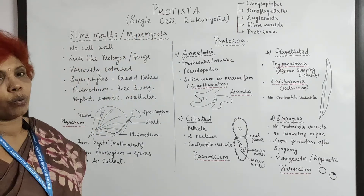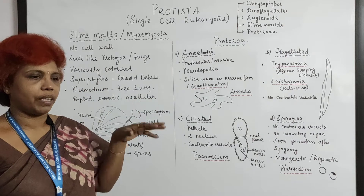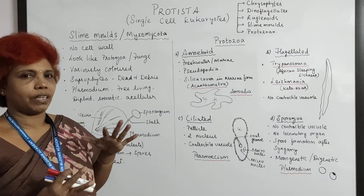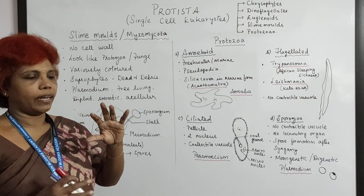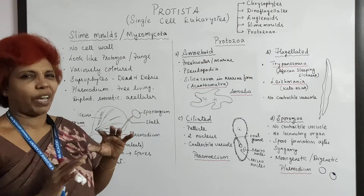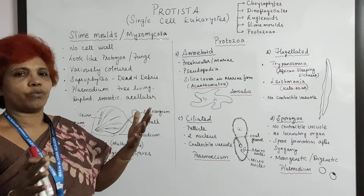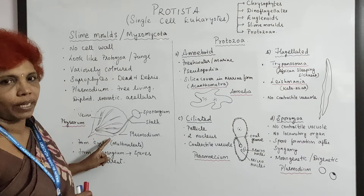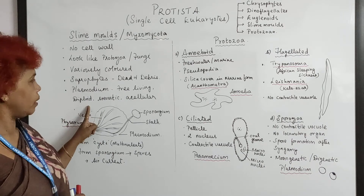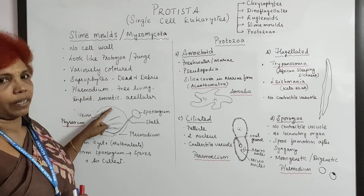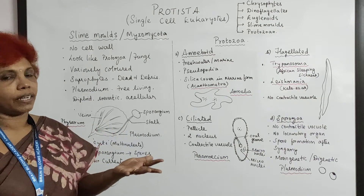The foremost feature of slime mold is that there is no cell wall. It is very slimy on the outside. Their body is special — they form from a diploid zygote and develop a special structure called plasmodium, which spreads across a few meters. This plasmodium is free-living, diploid, somatic, and acellular but with a multi-nucleate condition.